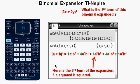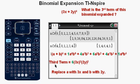Now, in this third term, we replace A with 3X and B with 2Y. And squaring both 3X and 2Y, we get 6 times 9X squared times 4Y squared.